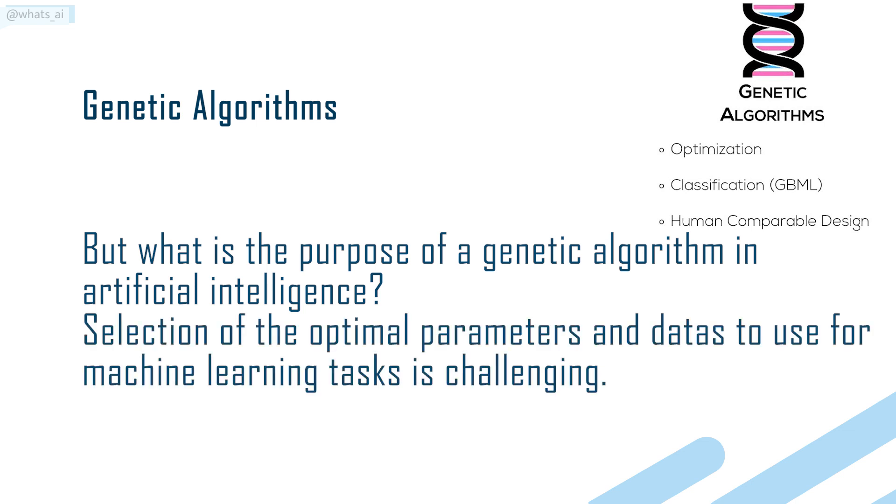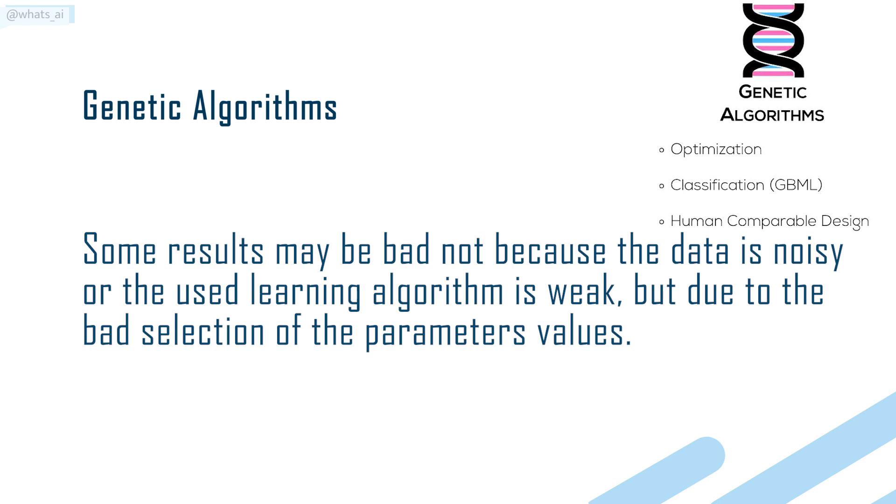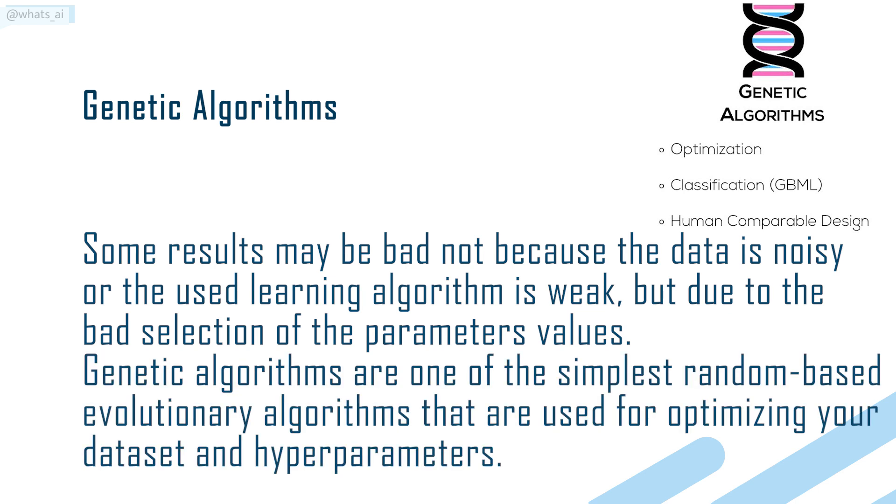Selection of the optimal parameters and data to use for machine learning tasks is challenging. Some results may be bad not because the data is noisy or the used learning algorithm is weak, but due to the bad selection of the parameter values. Genetic algorithms are one of the simplest random-based evolutionary algorithms that are used for optimizing your dataset and hyperparameters.